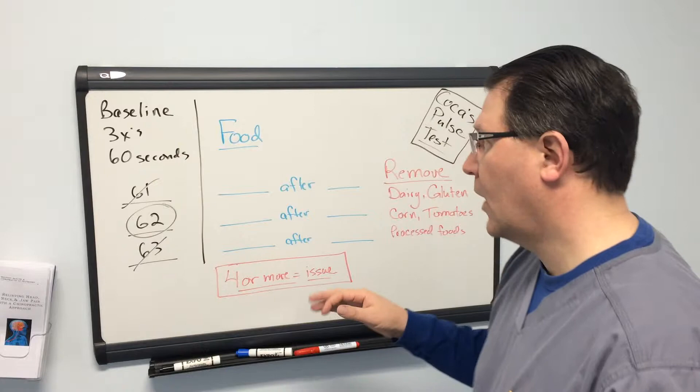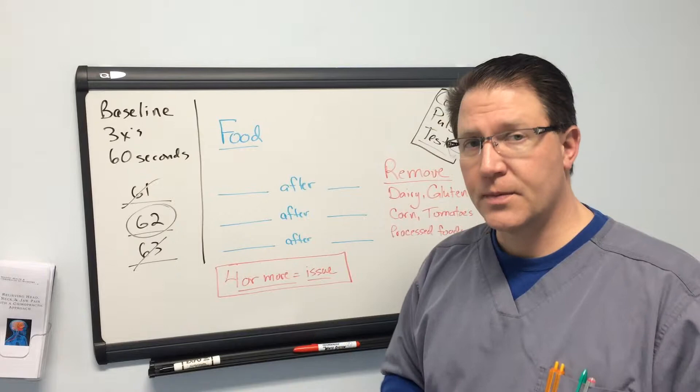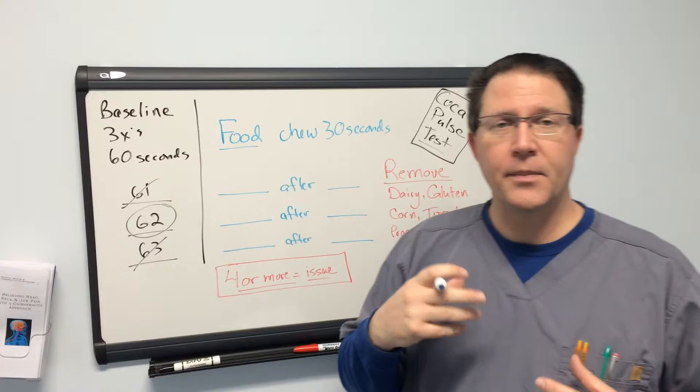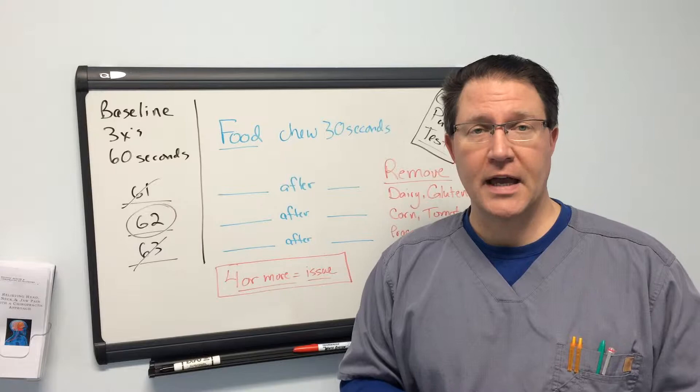And what you're going to do is now that we've got our baseline, we're going to test each individual food. And what you're going to do, I know this sounds gross, but you're going to chew it up for a full 30 seconds. And you're going to masticate, you're going to chew it up, and you're going to break it up into, it's almost like a liquid, it's a gooey mess, and you're going to keep it in there for a full 30 seconds.